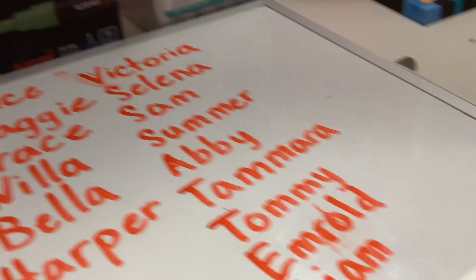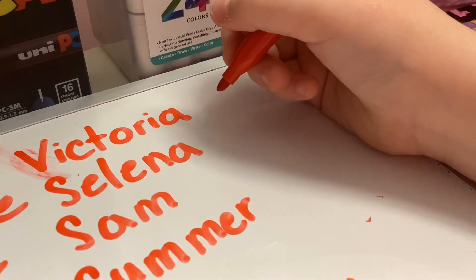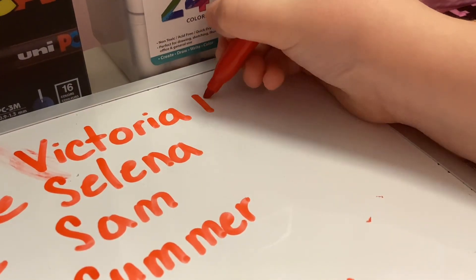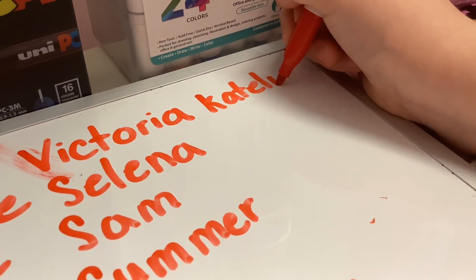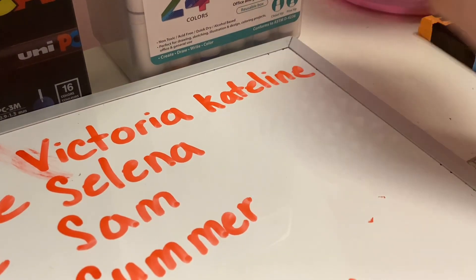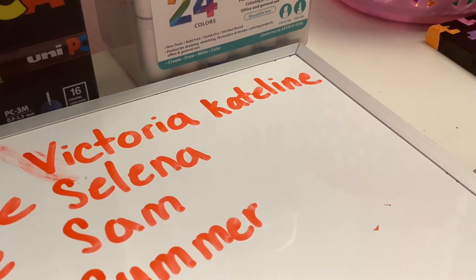We'll move you guys to the top because now we have to do Caitlin, which is the last one. It is K-A-T-E-L-I-N-E. Caitlin. That's how I spell all these names — maybe you guys spell them differently, but that's how I spell them. So if you're writing their names in the comments, this is how you'll spell their names.